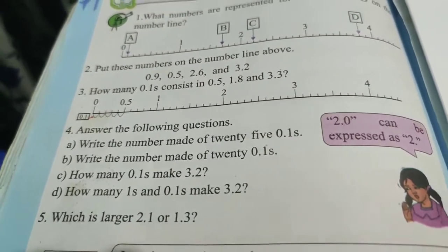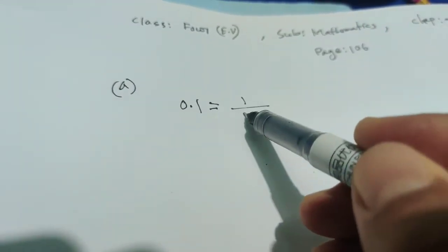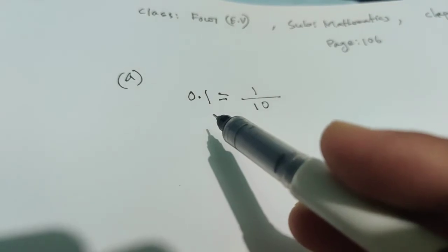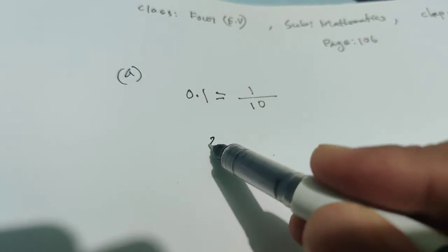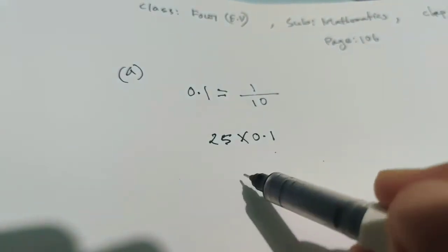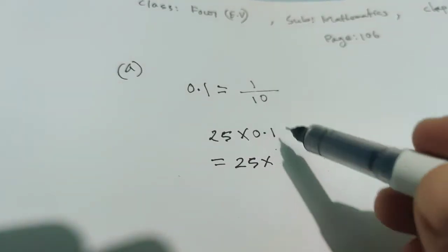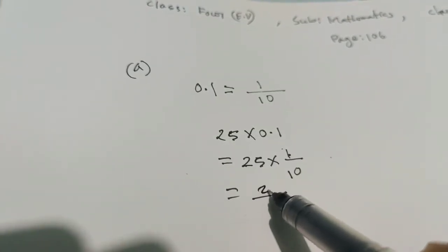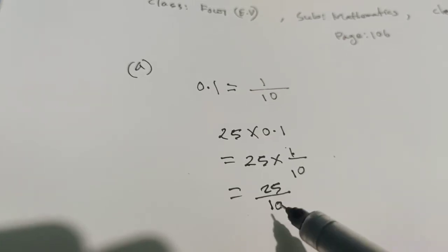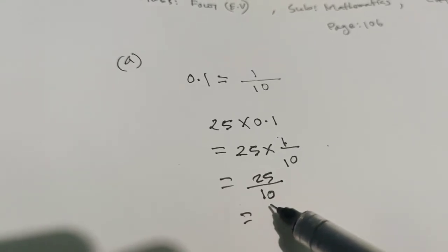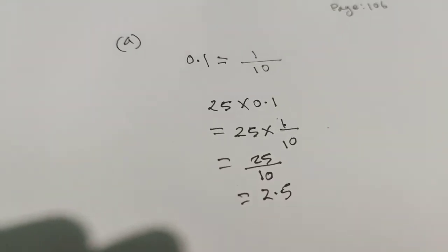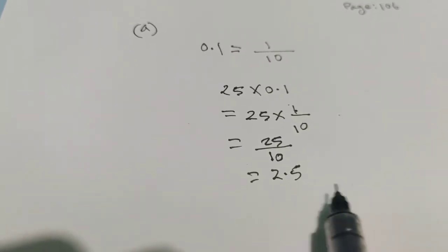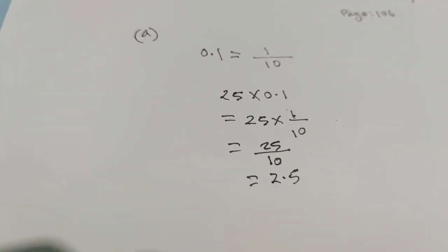We know that 0.1 means 1 by 10. The question has 25 × 0.1. So, 25 × 0.1 equals 25 × (1/10). The numerator is 25 × 1 = 25, and the denominator is 10. So, 25 by 10 equals 2.5. The answer is 2.5. So, 2.5 is the number mat of 25 × 0.1.